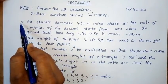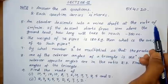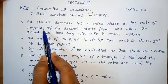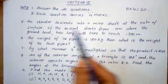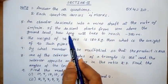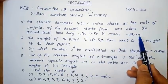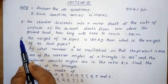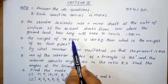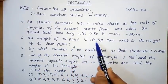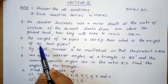Fifth question: An elevator descends into a mine shaft at the rate of 6 meters per minute. If the descent starts from 10 meters above the ground level. Sixth question: The weight of 72 pipes is 180 kg. Then what is the weight of 90 such pipes?